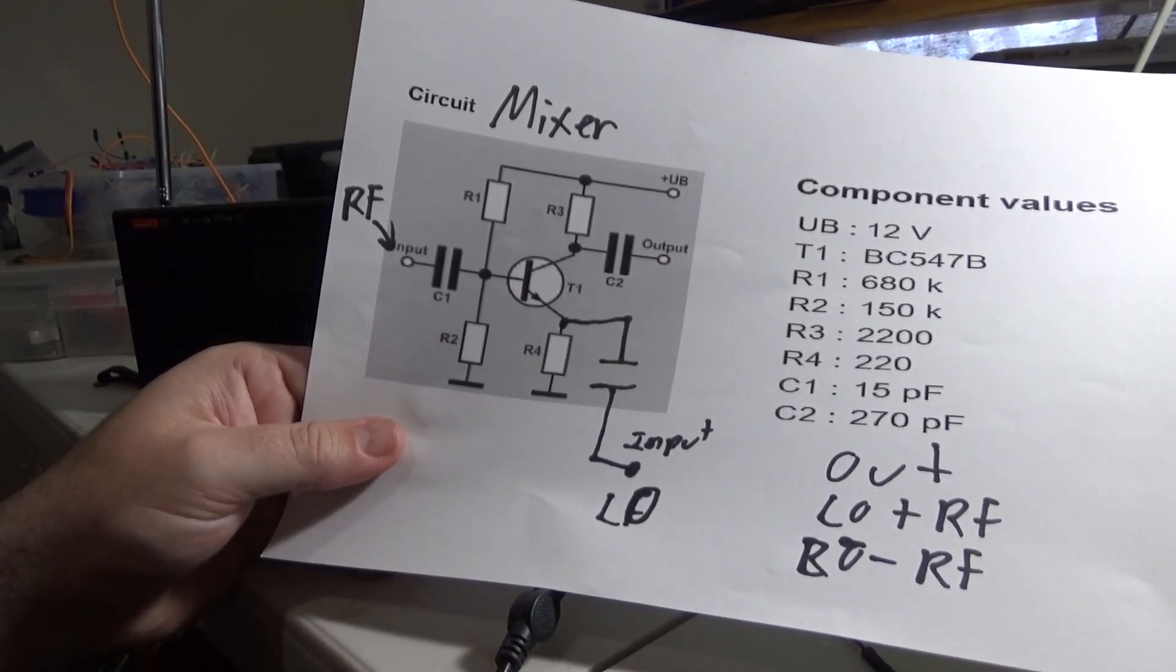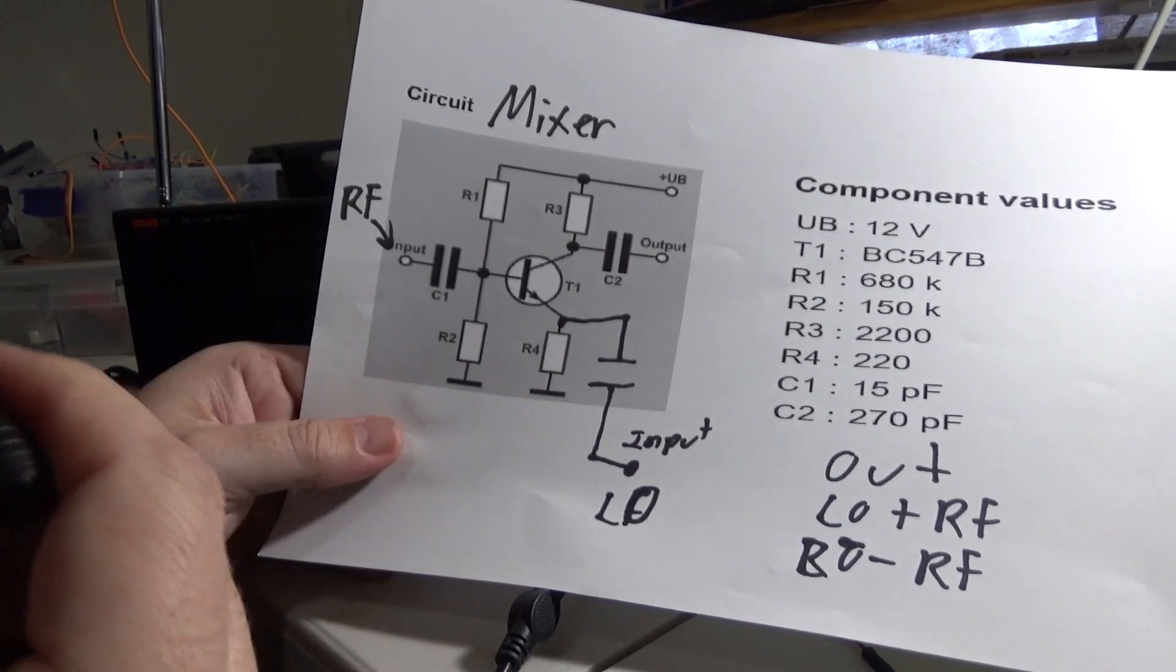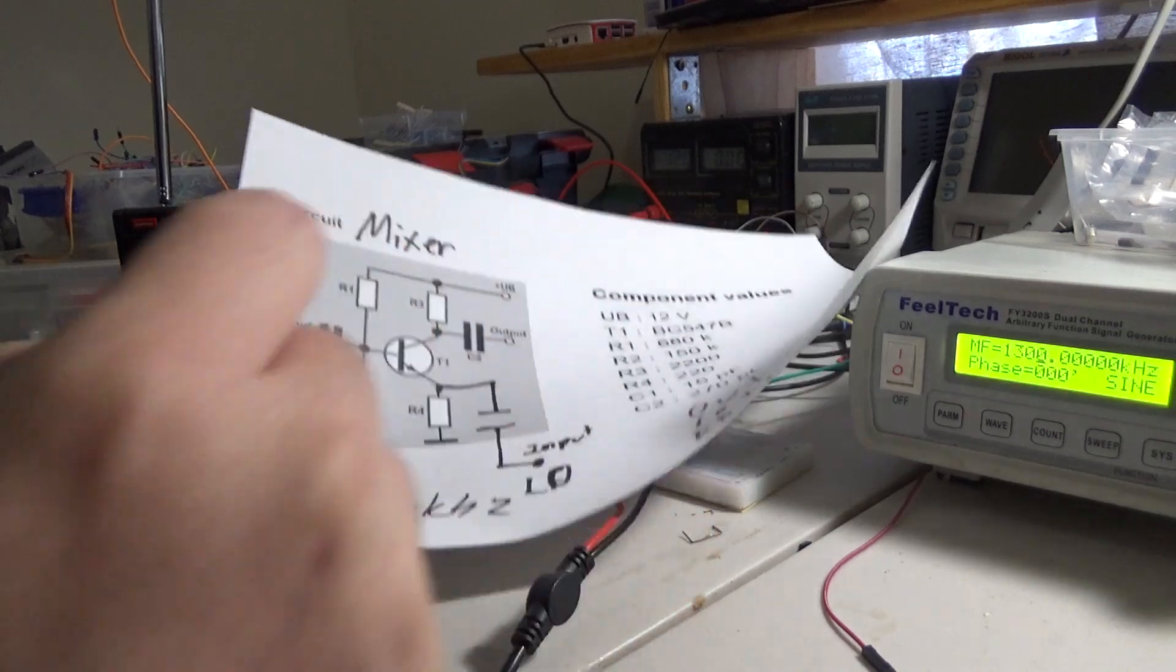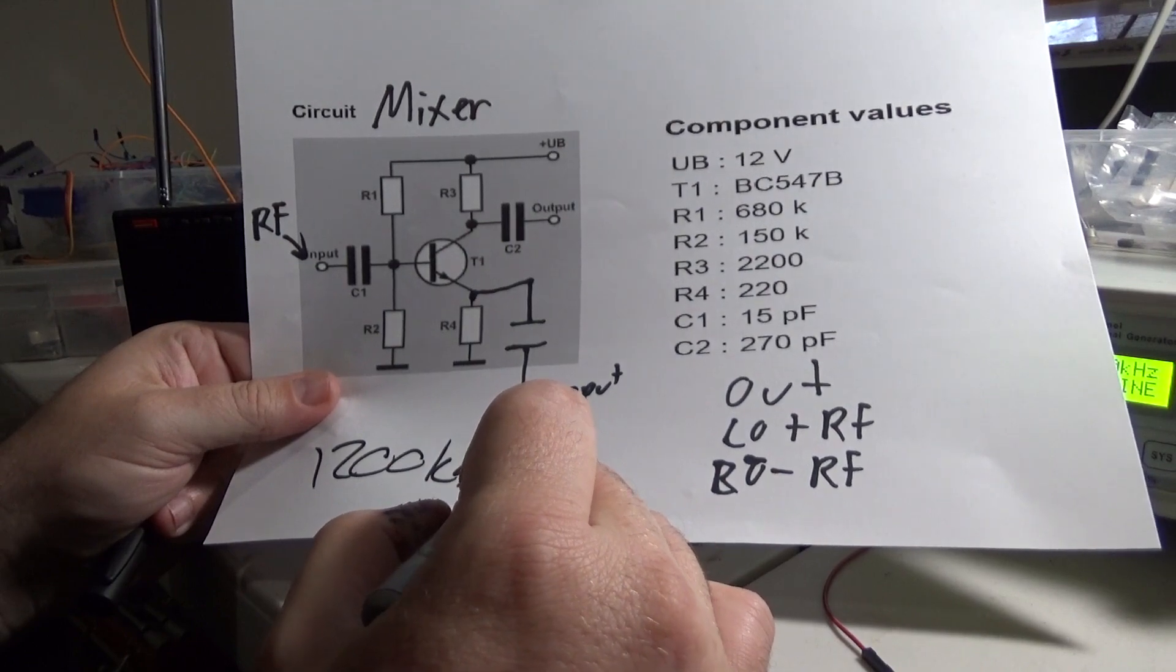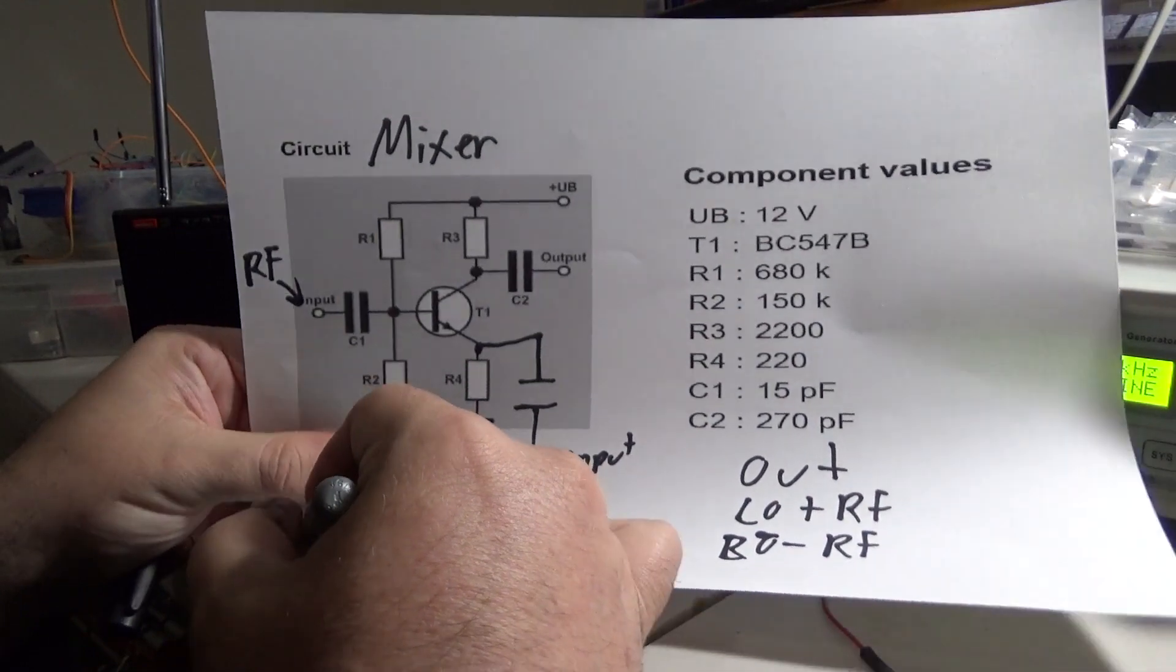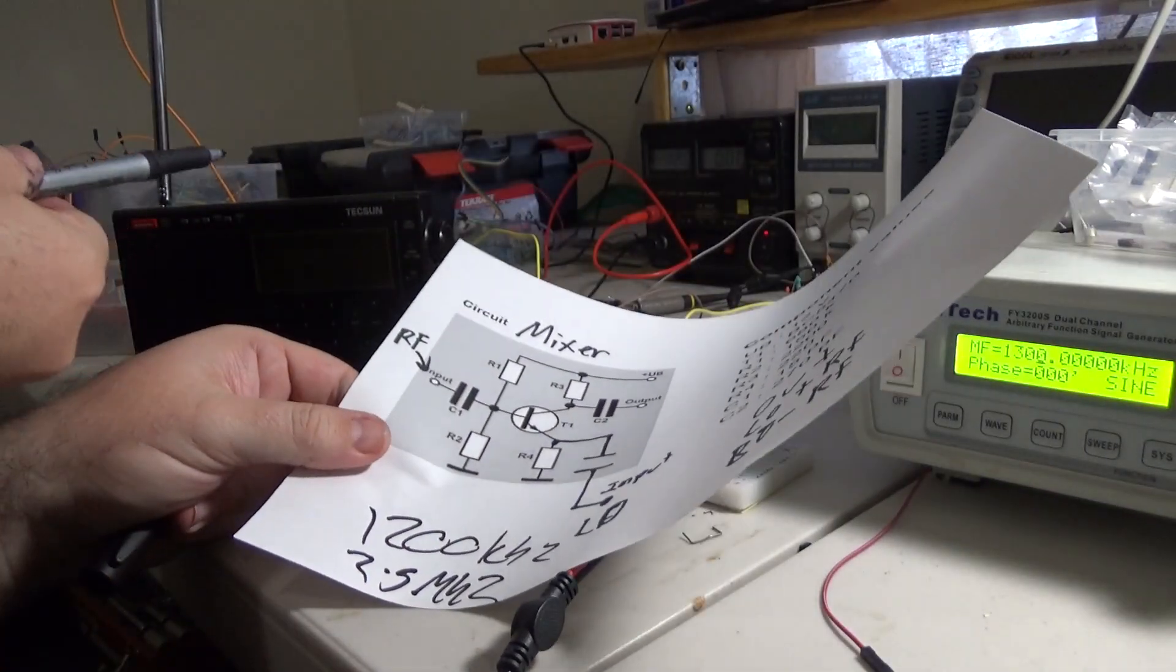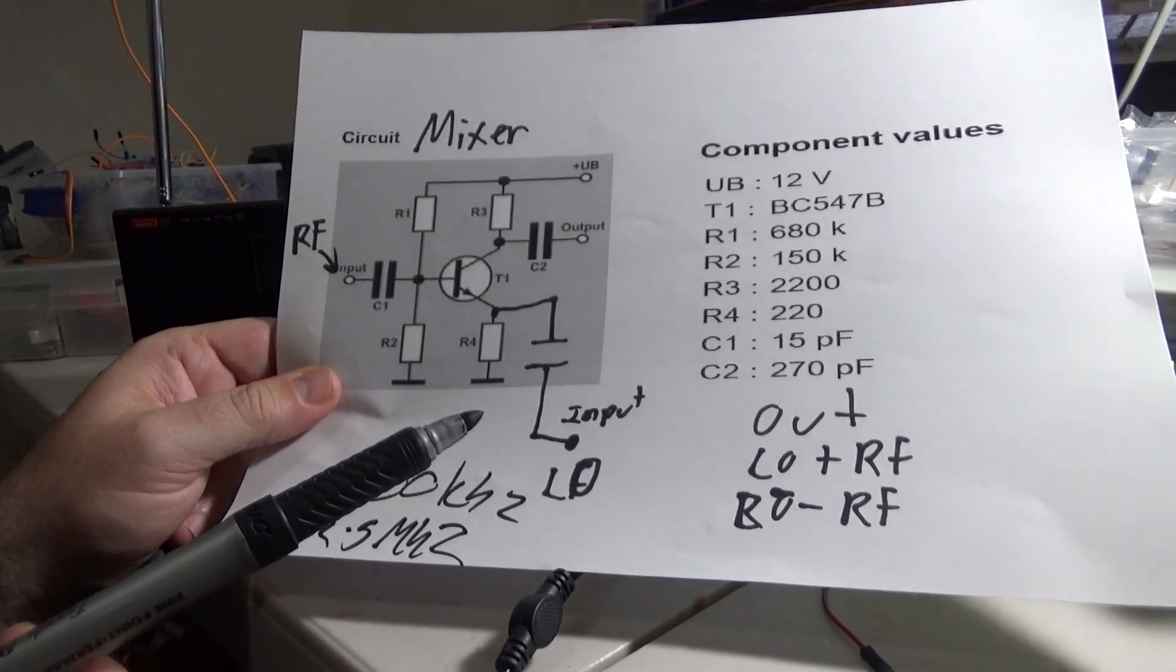How I'm going to demonstrate that is we're going to tune to a talk radio on AM on 1200 kHz and we are going to apply a local oscillator that sums it up to the shortwave frequency 2.5 MHz. And we'll pump the output into this radio so we'll be able to hear that it's actually working.